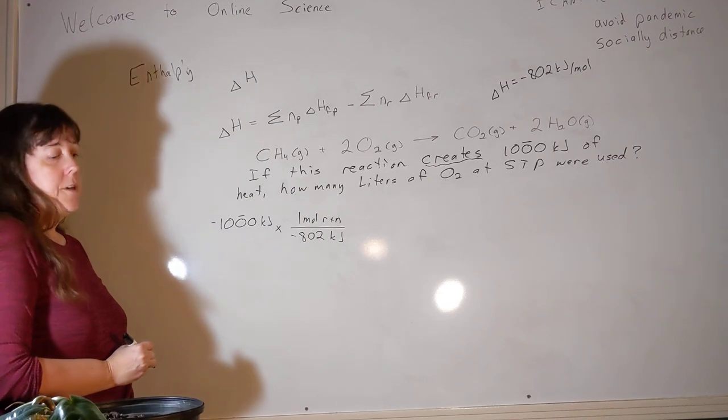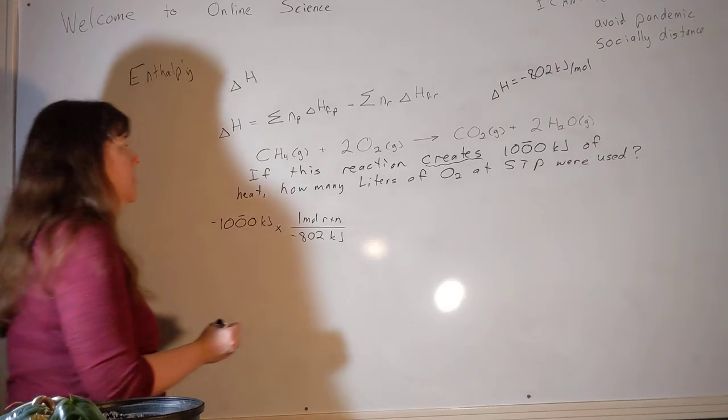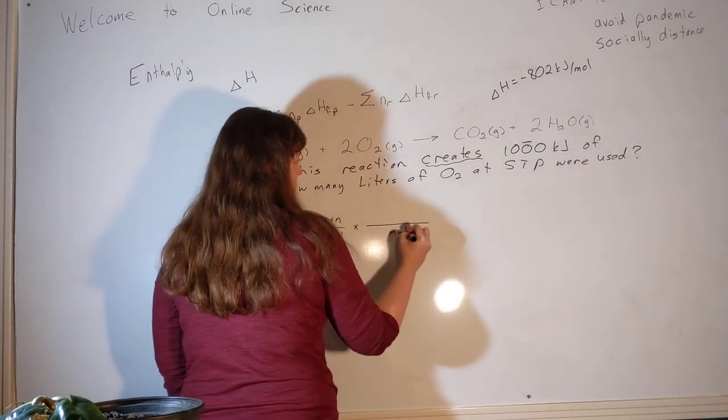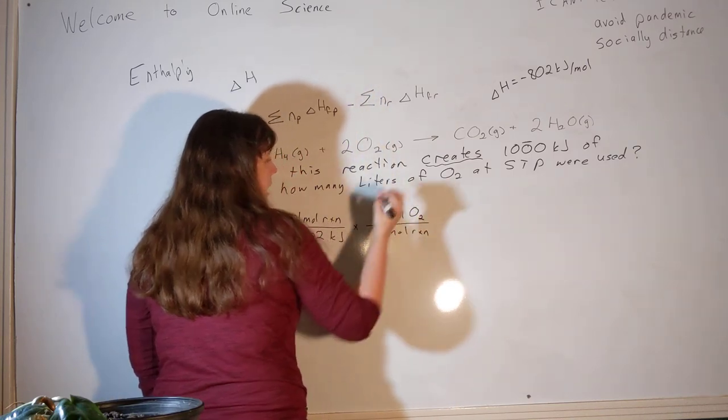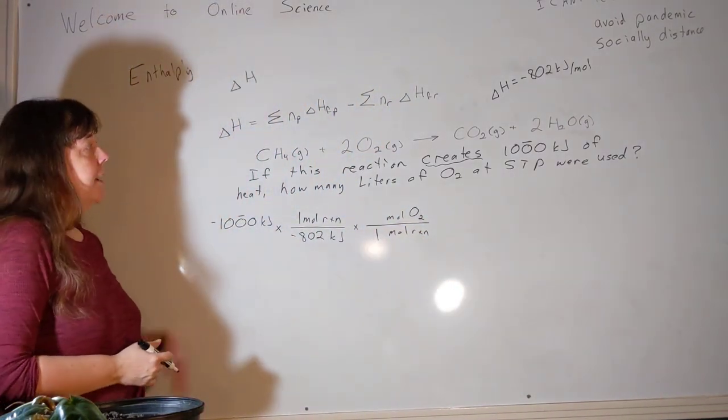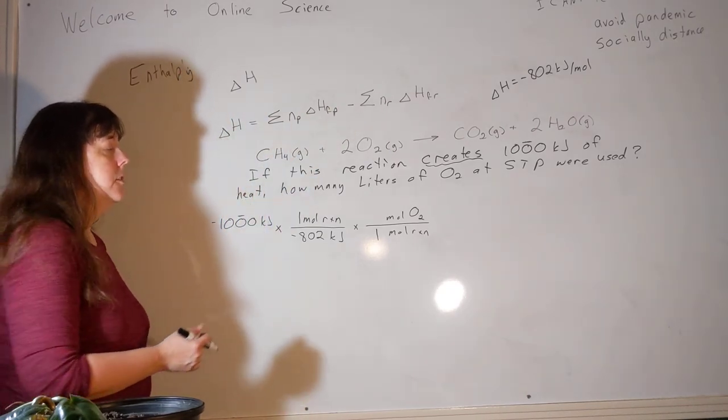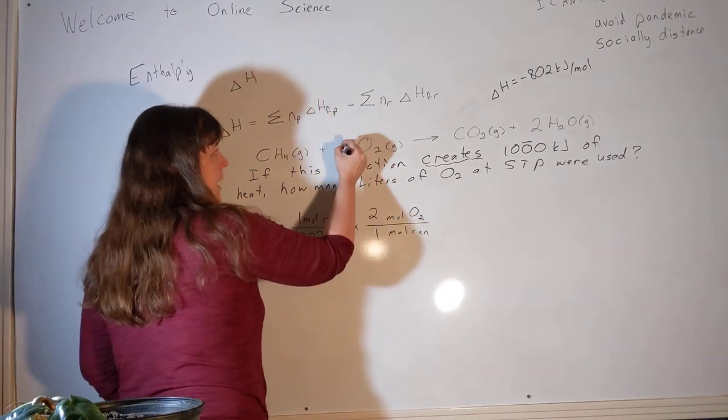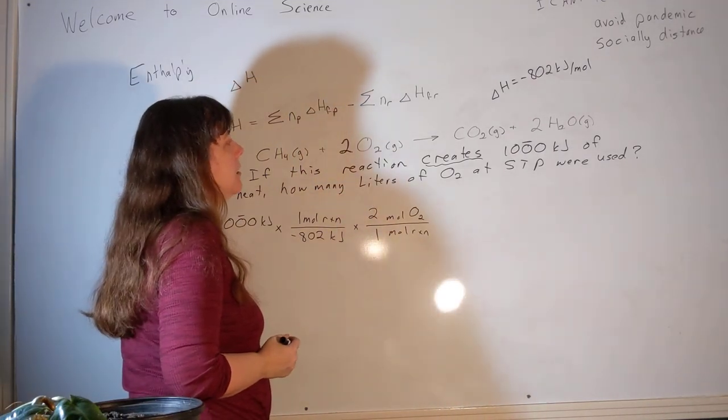So now we can figure out how many moles of reaction took place, but that's not what the problem asked us for. The problem asked us for liters of O2. So the next thing I need is a mole ratio. I need to go from moles of reaction to moles of O2. It's always going to be one mole of reaction when we're setting up a stoichiometry problem like this. But every time this reaction happens once, how many moles of O2 are involved? Two. Two moles of O2 are involved. That number two comes from the balanced equation, just like the number in that mole ratio has always come from the balanced equation.